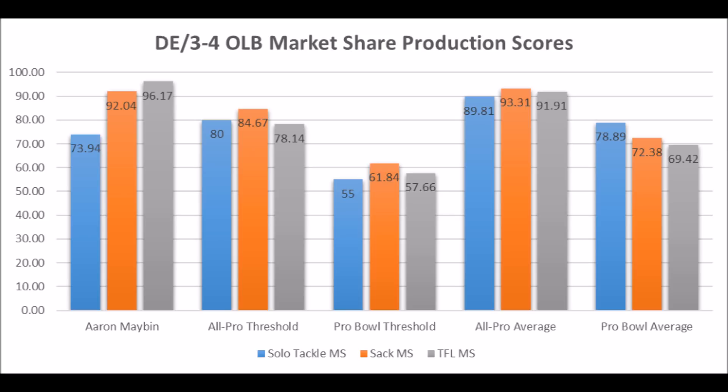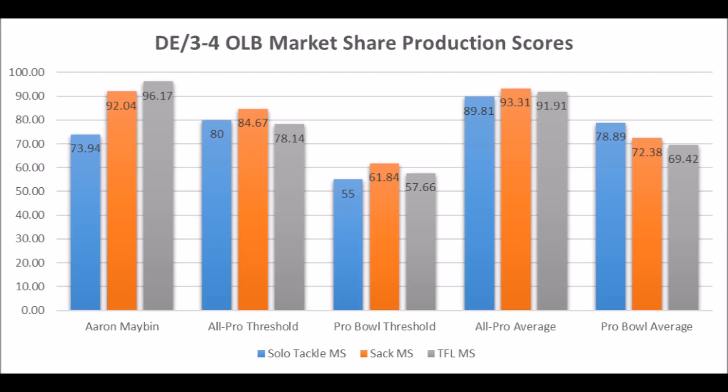The issue with Aaron Maben is in athleticism testing. He had an 80.83 explosive lower body strength score, but only a 39.65 speed score and a 23.64 flexibility score. In many ways, he did not have all-pro or pro-bowl potential athleticism in terms of speed and flexibility — he had starter potential at best in those areas.